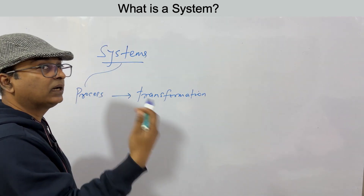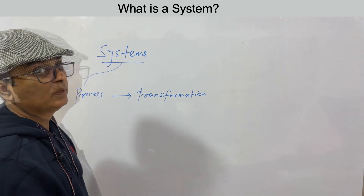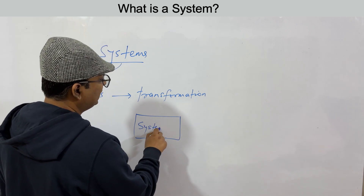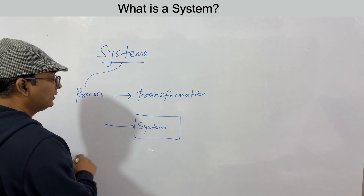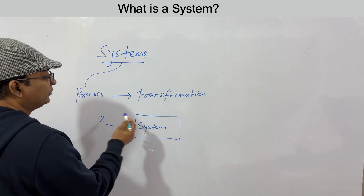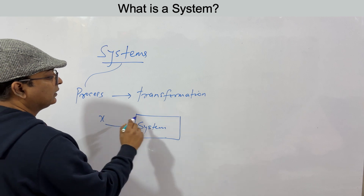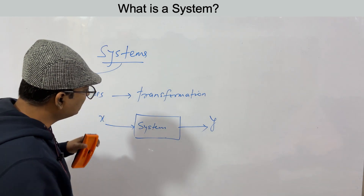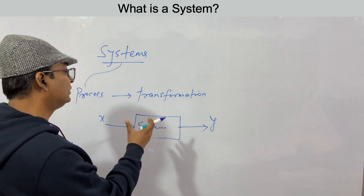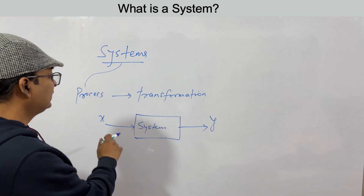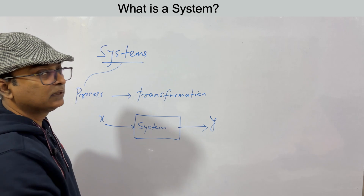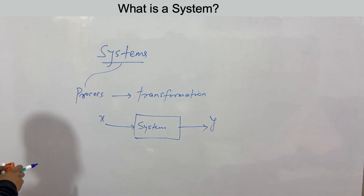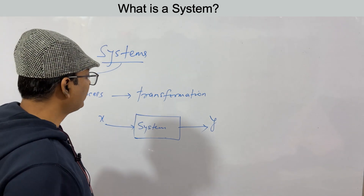The system transforms an input signal into an output signal that is very different from the input signal. So a system takes an input signal x and transforms it into another signal called the output signal y. This process causes the system to respond such that the input signal is transformed into the output signal.